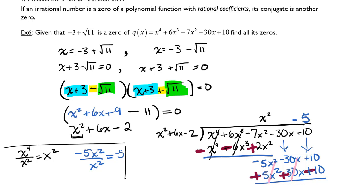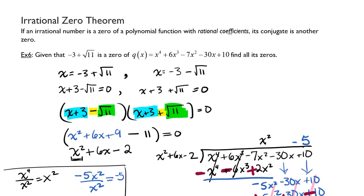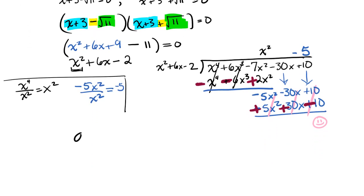When I do that, they will all add to zero and I will have a remainder of zero, which is what I was hoping for. And now I know what my other factors are. So now I'm going to rewrite my polynomial. It was a q of x, so q of x equals x squared plus 6x minus 2 times x squared minus 5.